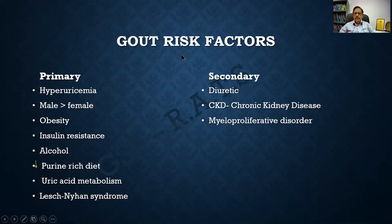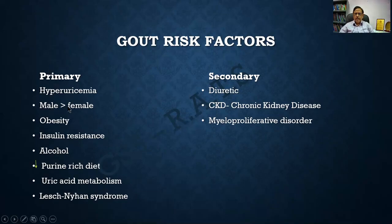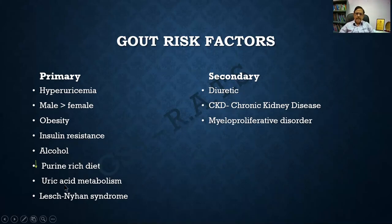The causes for gout are divided into primary and secondary causes. For primary gout, we usually do not know the exact cause, but underlying conditions include hyperuricemia, male sex predominance, obesity and insulin resistance, alcohol intake, a purine-rich diet, and a defect in uric acid metabolism. There is also a disorder called Lesch-Nyhan syndrome, in which gout can occur along with other features.